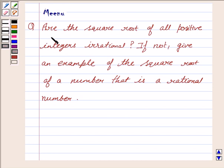The given question is: Are the square root of all positive integers irrational? If not, give an example of the square root of a number that is a rational number.